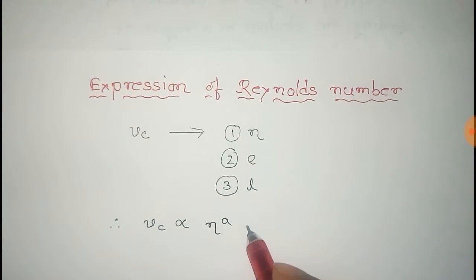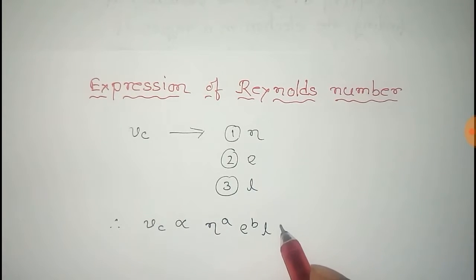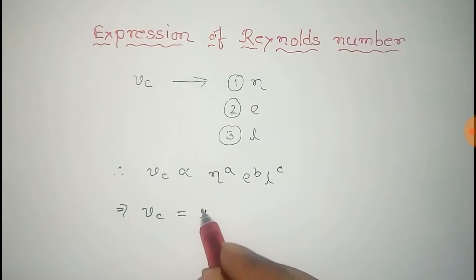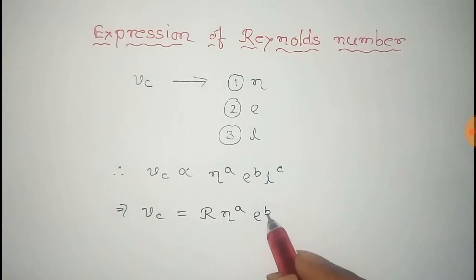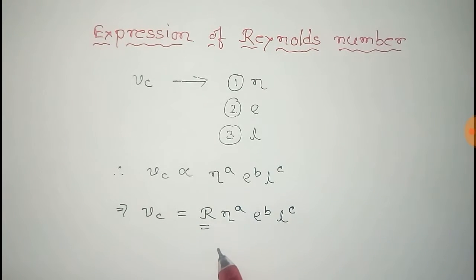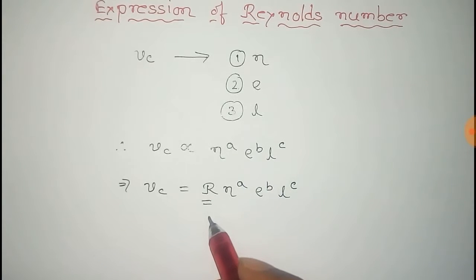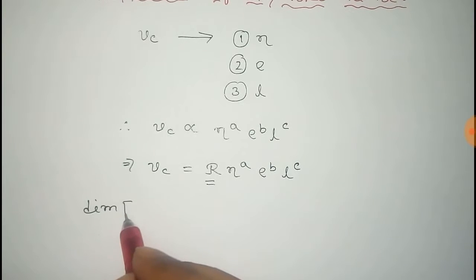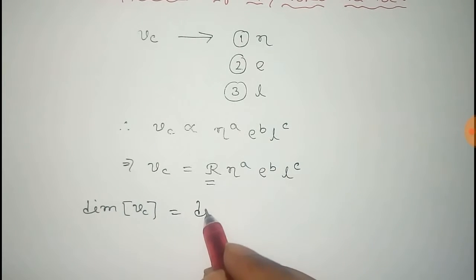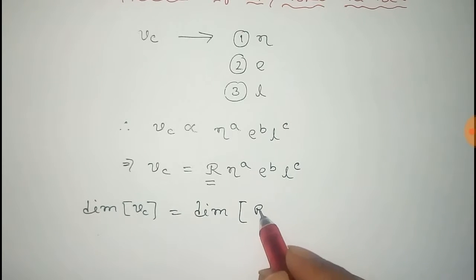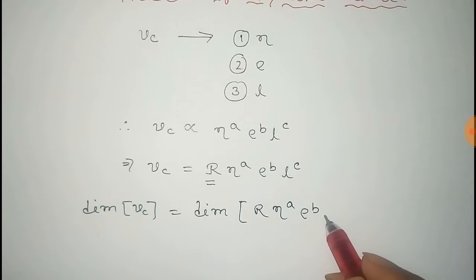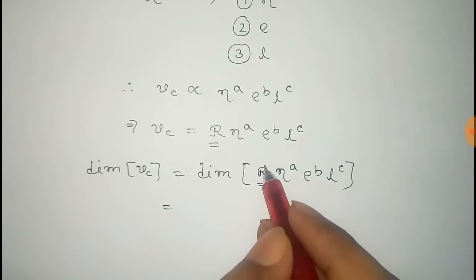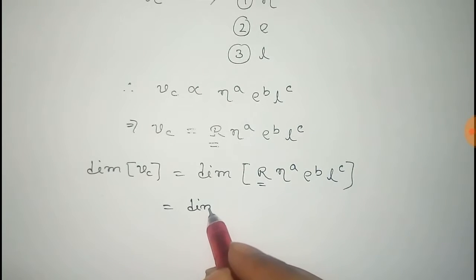So we can say that the critical velocity Vc is proportional to eta to the power a, rho to the power b, and L to the power c, where a, b, and c are all constants. From this, Vc equals R times eta to the power a, rho to the power b, L to the power c, where R is the proportionality constant called the Reynolds number. Now from this equation, the dimension of Vc must equal the dimension of R times eta^a times rho^b times L^c. Since Reynolds number is a dimensionless quantity, we can ignore it.